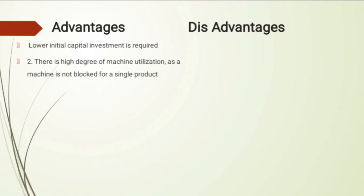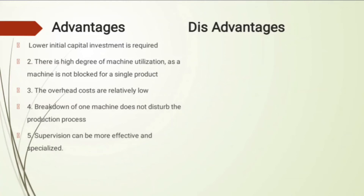Advantages of the process layout: there is a high degree of machine utilization since a machine is not blocked for a single product. Unlike product layout where one machine breakdown stops the whole line, in the process layout you have multiple machines — for example, five or ten drilling machines — so if one breaks down, production continues. Overhead costs are relatively low, and the breakdown of one machine does not disturb the production process.